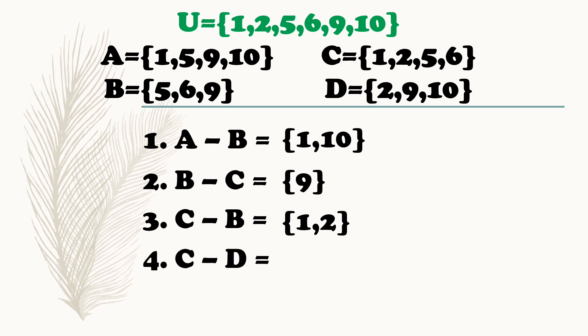Another example: difference of set C and set D. C is {1, 2, 5, 6}. Set D: {2, 9, 10}. So ano yung elements ni set D na meron kay set C? 2 lang. So ano yung elements na matitira kapag tinanggal natin si 2? 1, 5, 6.